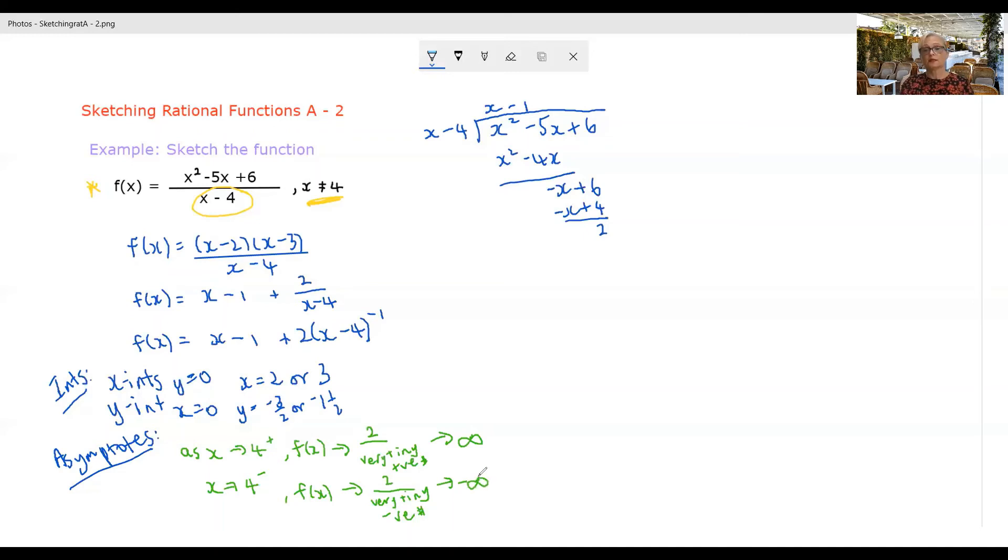So what we're saying is, let me just draw a little picture here to sort of show you what's happening. Here's your axes, here's x is four. We're saying as we're coming in from above, so as our x values are coming in this way, we're heading up towards positive infinity.